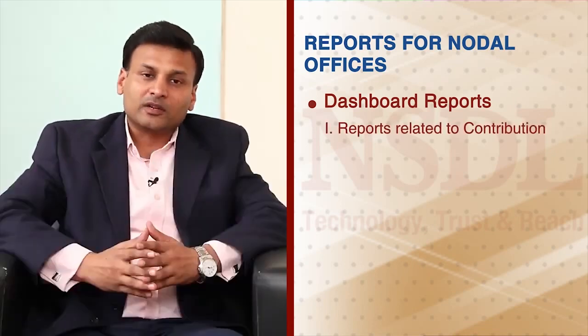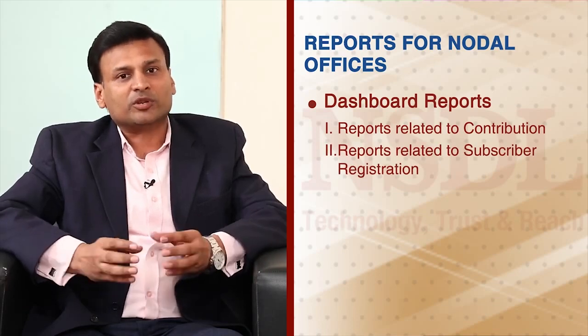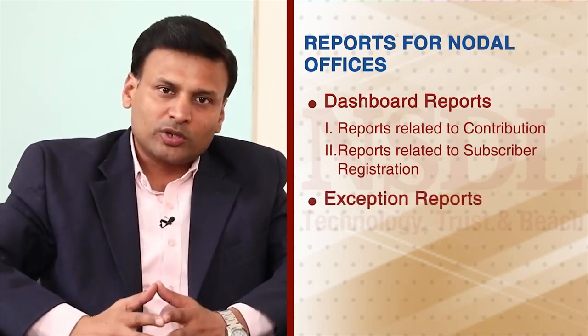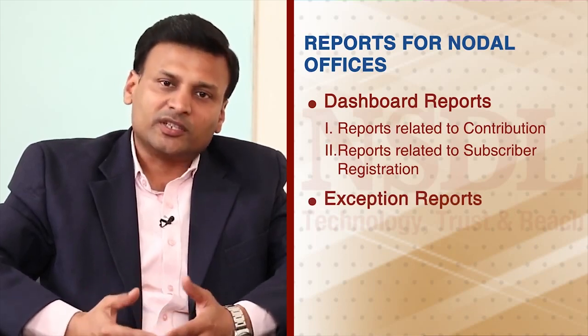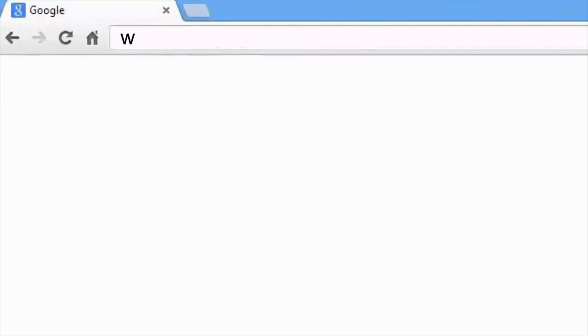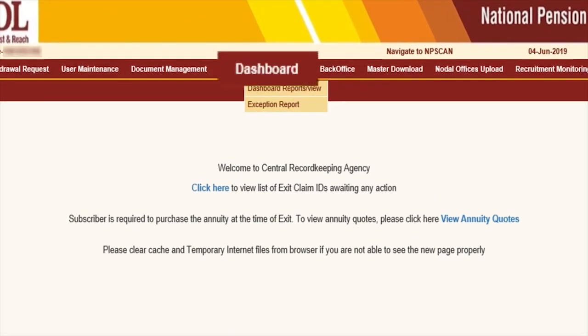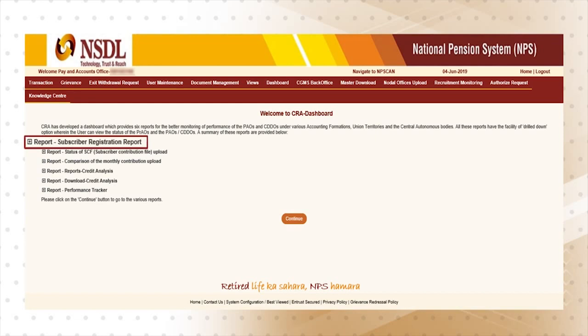Dashboard carries information about activities performed by the nodal office. Primarily, contribution upload has been focused upon. Contribution is the most critical activity for nodal offices. Along with this, subscriber registration information is also available. Exception reports help nodal offices control their activities, alerting them on areas requiring immediate attention. To view both these reports, nodal offices don't have to go anywhere else — they can log in to the CRA website at www.cra-nsdl.com with their user ID and password and view them in the dashboard menu. A brief description of each report is also provided for nodal offices' better understanding.